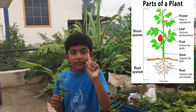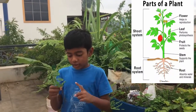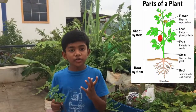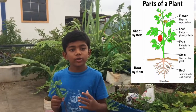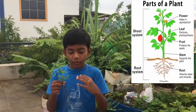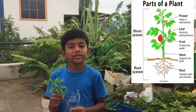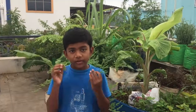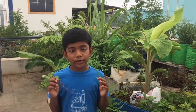The first one is the shoot and the next one is the root. The shoot is the part where the plant grows above the soil, and the root is the part of the plant which grows under the soil.